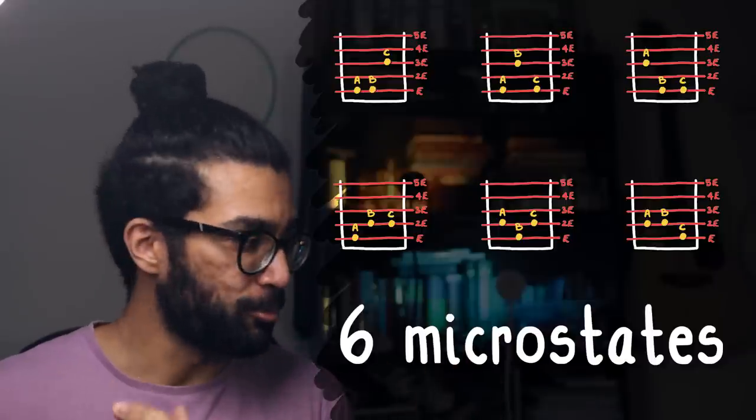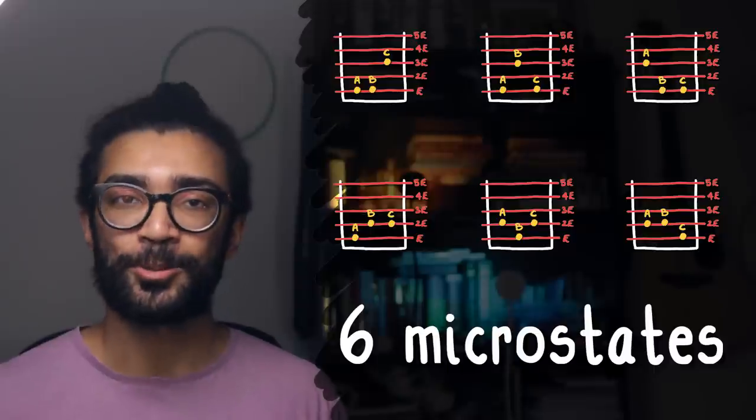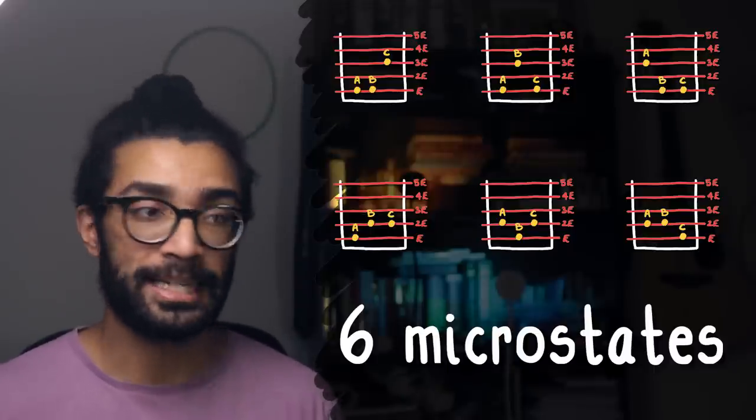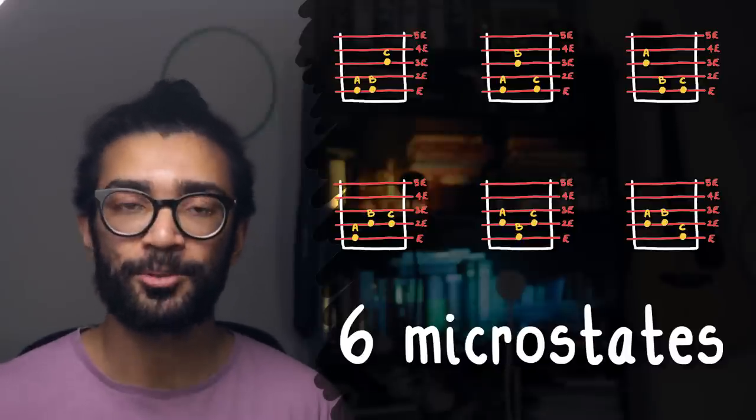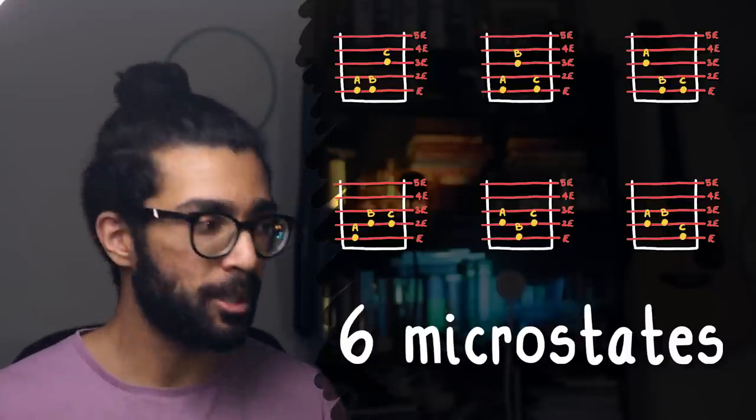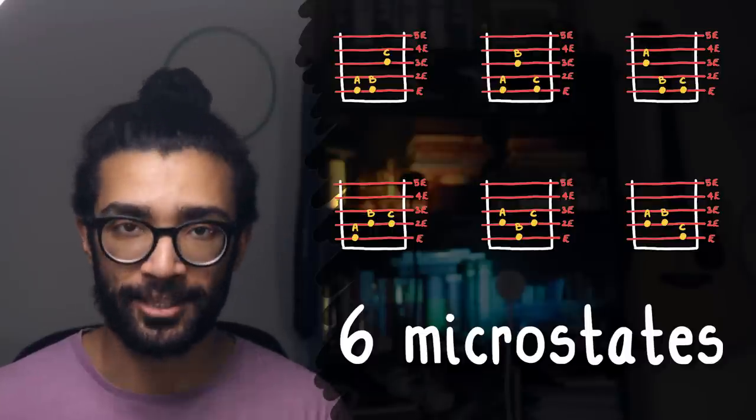Anyway, let's come back to all of these possible microstates of our system. As we saw for this particular system with total energy 5E, three particles in the box, and each of those particles can occupy an energy level of E, 2E, 3E, and so on. There are six possible different microstates the system can occupy. And this is important because the total number of microstates that a system can occupy is directly linked to its entropy.